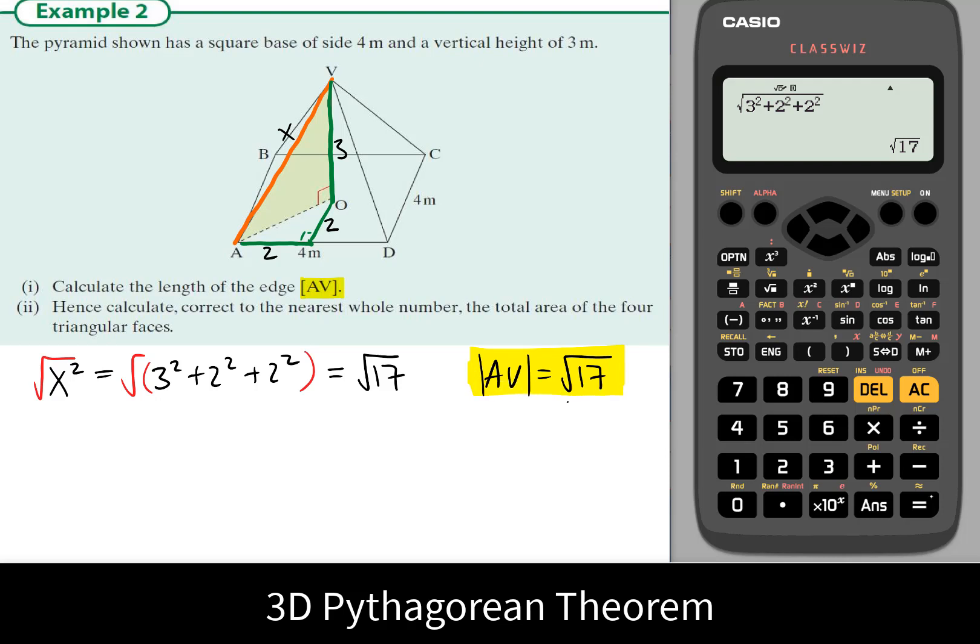We're now also being asked to find the correct nearest whole number of the total area of the four triangular faces. I'll draw one of them here, it's an isosceles. We know its slant height, it is root 17 on both sides, it has a base of 4. If I break it in half, I could turn it into this right-angled triangle with a side of 2 and root 17.